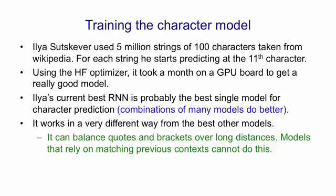For example, if it has a bracket and it wants to close it 35 characters later, in order to do that properly, a model that relies on matching previous contexts would have to match all 35 intervening characters. And it's very unlikely that it has that whole string stored.